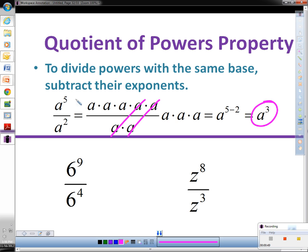What we really did was we took five a's and we subtracted two a's and we ended up with three a's. We subtracted the exponents. That rule works as long as the base is the same.